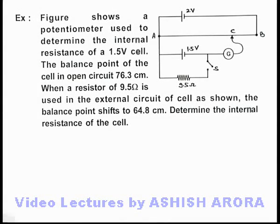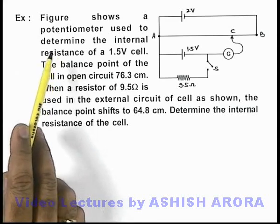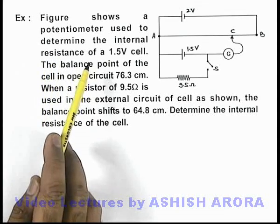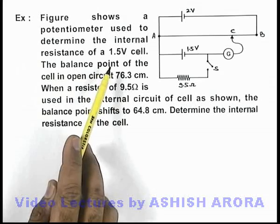In this example, we are given that the figure shows a potentiometer used to determine the internal resistance of a 1.5 volt cell.